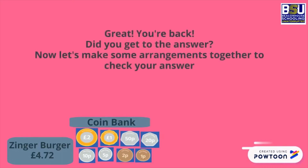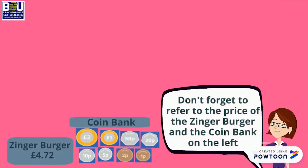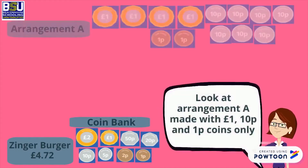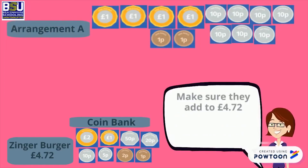Great, you are back! Did you get to the answer? Now let's make some arrangements together to check your answer. Don't forget to refer to the price of the zinger burger in the coin bank on the left. Look at arrangement A, made with 1-pound, 10-pence, and 1-pence coins only — make sure they add to 4.72 pounds.